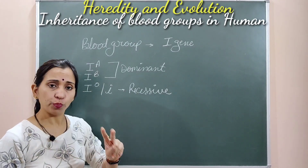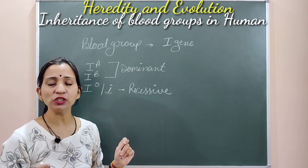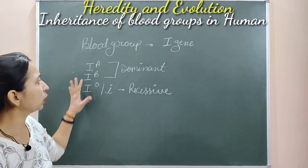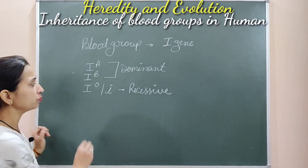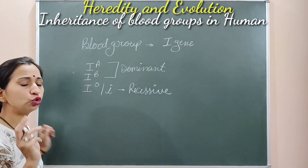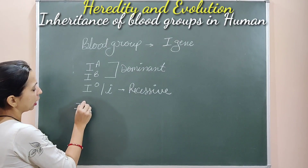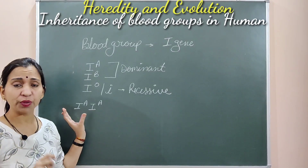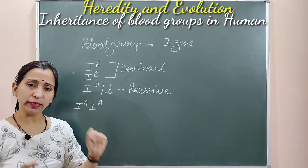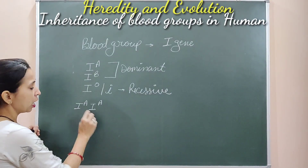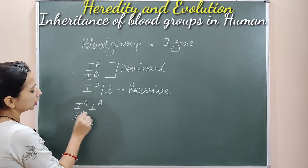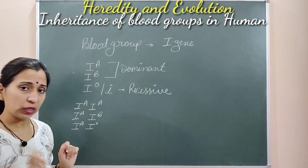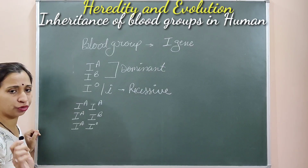Any two alleles are found in each individual, and they decide what kind of blood group will be present. The possible combinations for Ia are: Ia with Ia (homozygous dominant), Ia with Ib (heterozygous), or Ia with Io (heterozygous). These are the different conditions in which the Ia allele can be found.